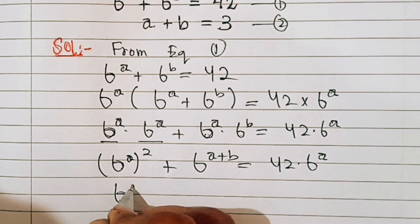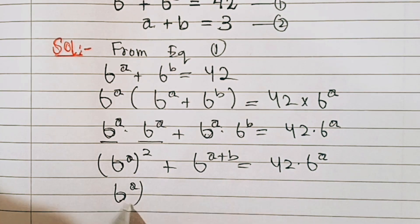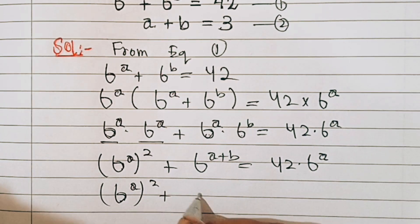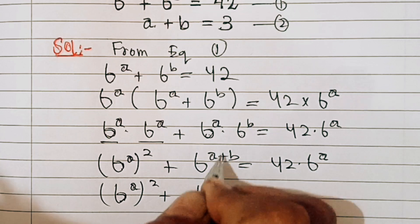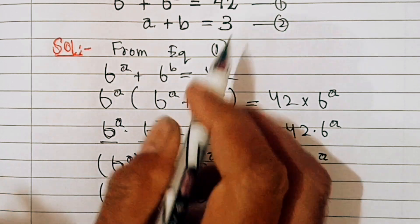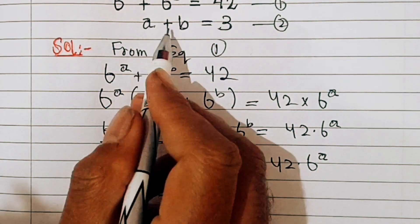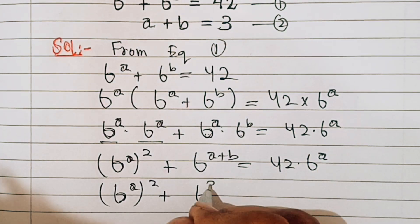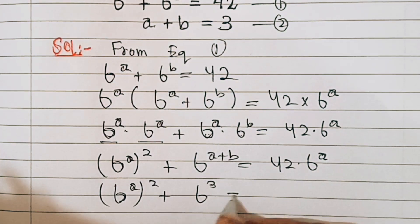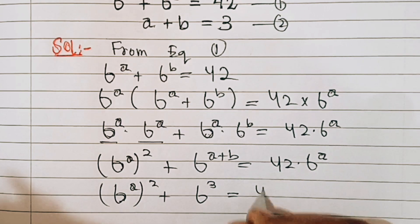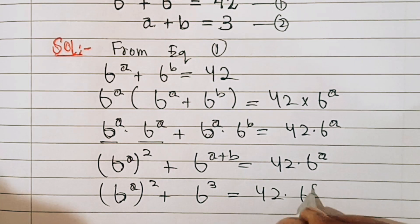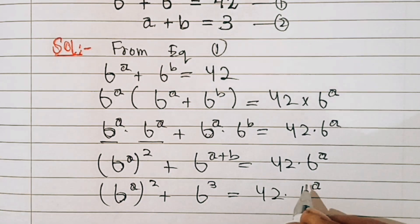So that is 6 power a whole square plus 6 power (a plus b). Now from the question, we have a plus b equal to 3. So this becomes 6 power a whole square plus 6 cubed equal to 42 times 6 power a.